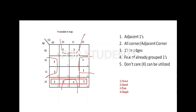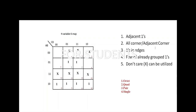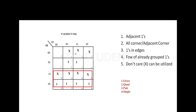Now, taking this 4-variable KMAP for better understanding — see how don't cares help. If you use adjacent ones only, you get only a quad. But don't cares help you form an octet, which is our maximal grouping — so you can utilize them. In another example, many students form a pair on seeing adjacent ones, but that is wrong. Here, adjacent ones, already grouped ones, and don't cares are combined — three rules together — helping form the octet.